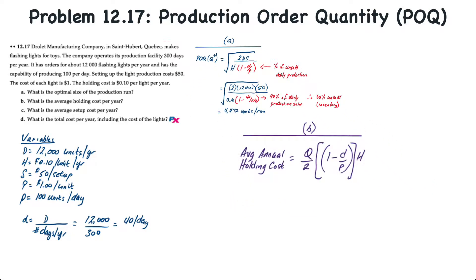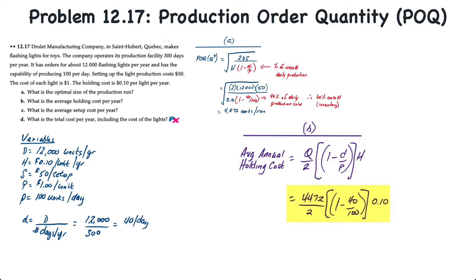For requirement B, we want to determine the average annual holding cost. That equals Q over 2, multiplied by (1 minus d over p), times H. This is a modification of the EOQ formula where it was just Q over 2 times H. Here we apply the holding cost only to the percentage of daily production that is unsold and held in inventory. So: 4,472 divided by 2, times (1 minus 40/100), times $0.10 — that is 2,236 times 60% times $0.10, which equals $134.16.